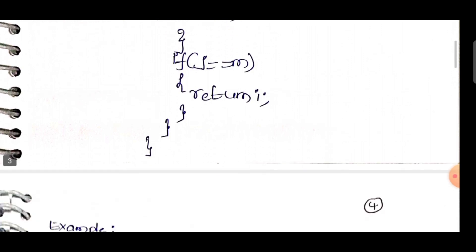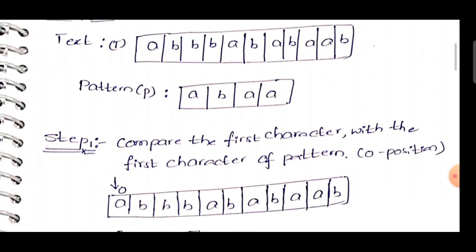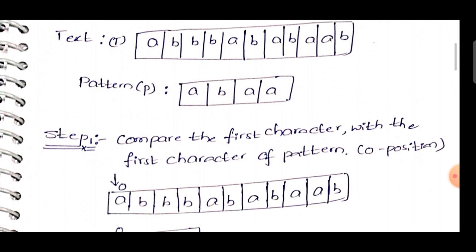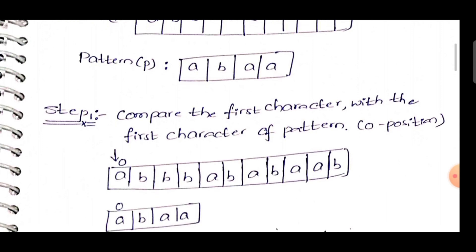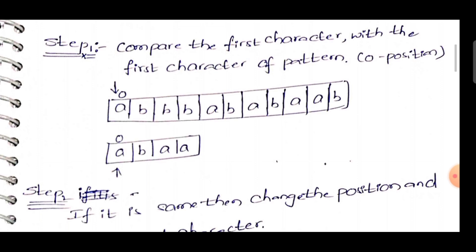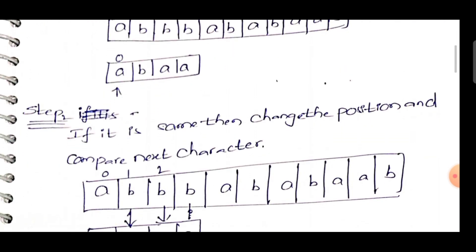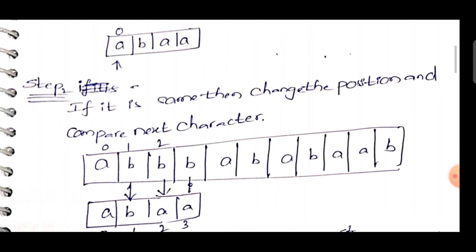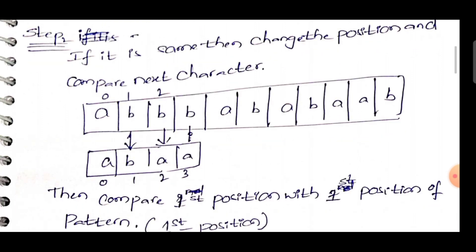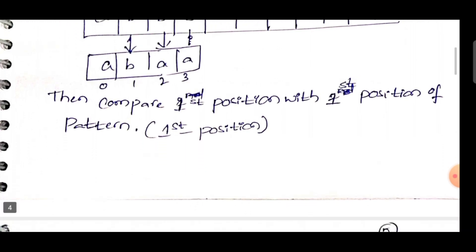For example, the text T is A A A B A B A B A B A A B and the pattern P is A B A A. We check whether the pattern belongs to the text. First, we compare the first character in the text with the first character in the pattern at position zero: A equals A, so there is a match. We move to check the next location — first position in text and first position in pattern. B equals B, both matched, so we move to the next position. The characters are A and B — those two are not equal.